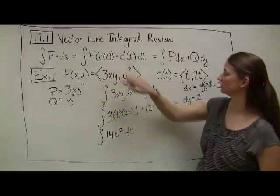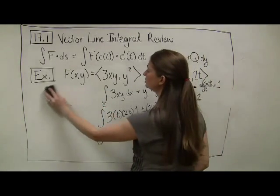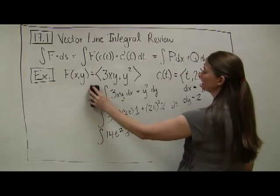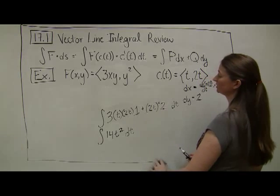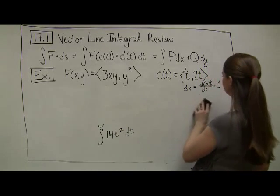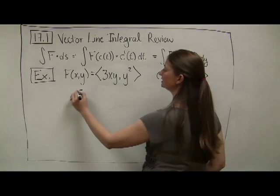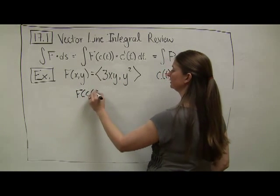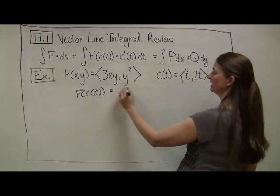If we had done it the old school way, we would compute f(c(t)) and then take the dot product with c'(t). This works out very similarly. f(c(t)) means I plug my path c(t) into my f function.